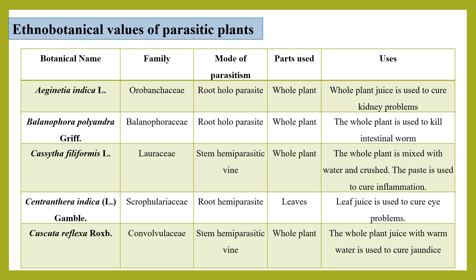Cassytha filiformis — the whole plant is mixed with water and crushed into a paste, which is used to cure inflammation. Santalum indica — leaf juice is used to cure eye problems.